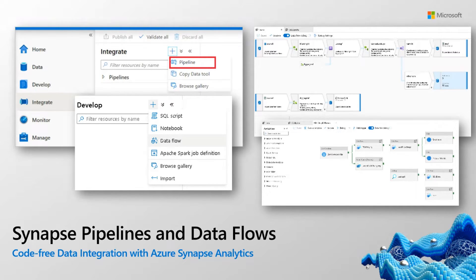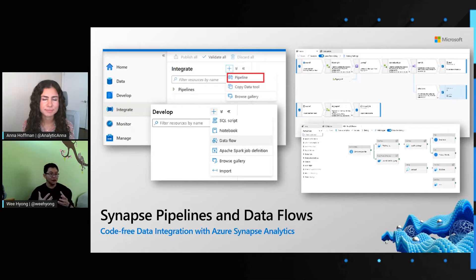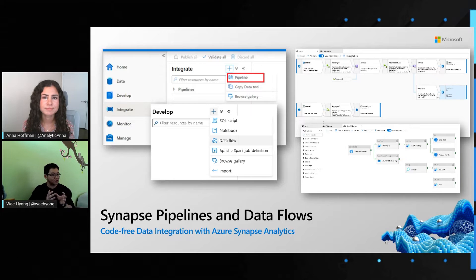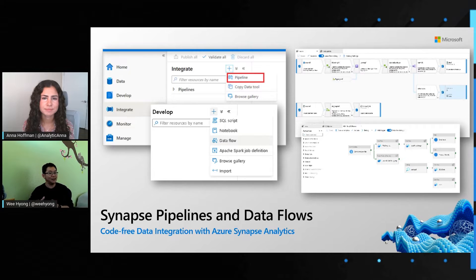Other things you'll get in the Synapse workspace is Synapse data flow. When you use Synapse data flow, you literally have the same code-free data integration experience that you might already be used to. From the moment you start creating a data flow in Synapse — from your source to your transformation to your sync — everything is the same. But more importantly, this runs on Synapse Spark, which allows you to run these data flows at amazing scale.